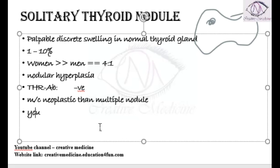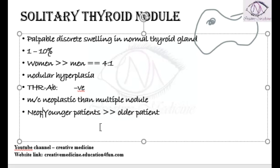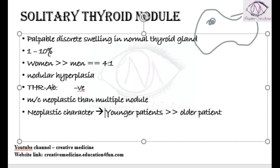Younger patients have increased chances of malignancy when compared to older patients. The neoplastic character is more common in younger patients — solitary thyroid nodule is more likely to be a neoplastic lesion in younger patients than in older patients.